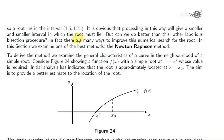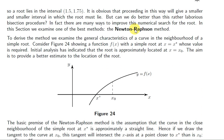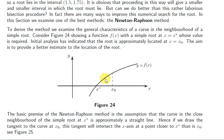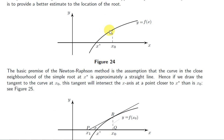A much better improvement on that method is the Newton-Raphson method. The premise of the Newton-Raphson method is that the curve in the neighborhood of x*, where x* is the root, can be approximated by a straight line. We're assuming we have a simple root at x*, so the tangent to the curve at x* is not horizontal. If we draw the tangent to the curve at x₀, then the tangent will hit the x-axis at a point closer to x* than x₀ is.